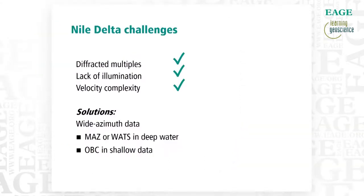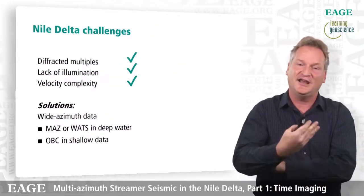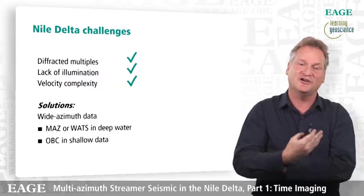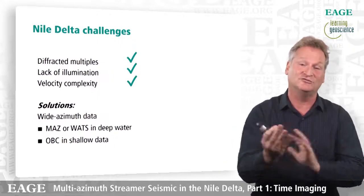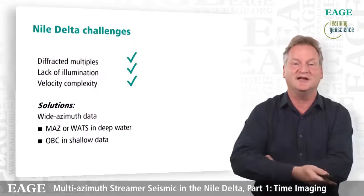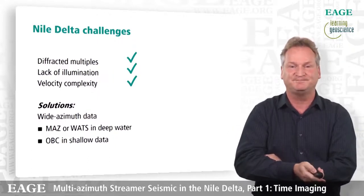The solution we've used is multi-azimuth seismic, but more generally wide-azimuth seismic would achieve this. Whether you use multi-azimuth or wide-azimuth towed-streamer, as people have done in the Gulf of Mexico for deep water, they will have similar features to what I've shown today. In shallow water, OBC will also allow you to acquire data in a wide-azimuth sense.